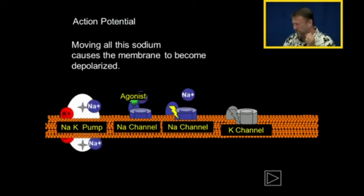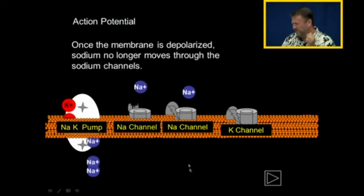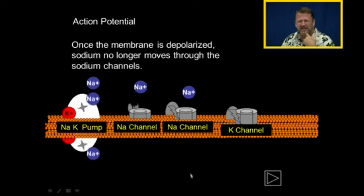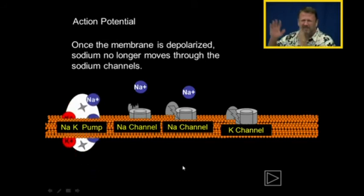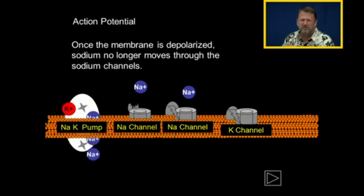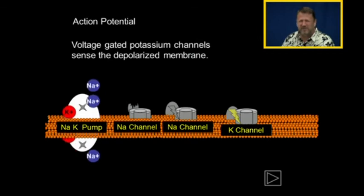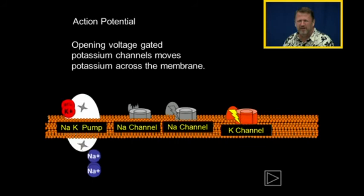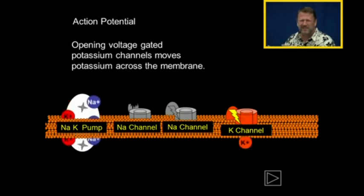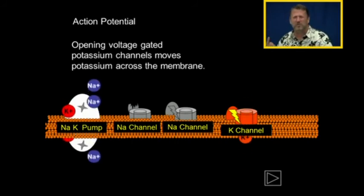Once all this sodium comes rushing into the cell, it becomes positive inside of the cell. The membrane is depolarized. Sodium won't come rushing through those sodium channels anymore. Now that it's positive on the inside of the cell, a voltage-gated potassium channel senses that depolarized membrane, and potassium comes rushing out.